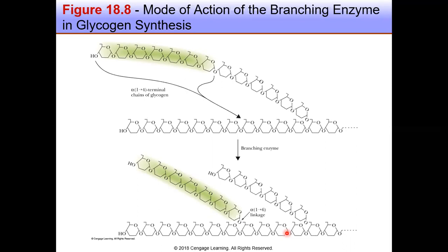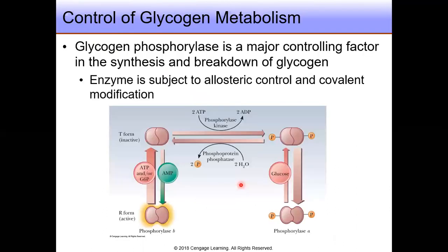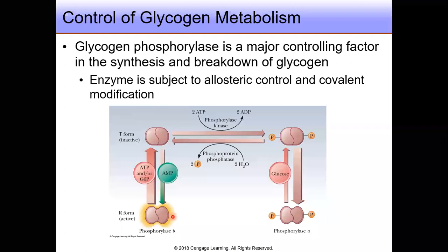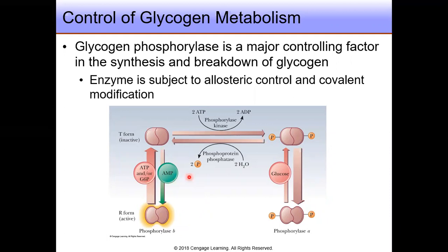Balancing glycogen breakdown and production: how does an organism ensure that glycogen synthesis and glycogen breakdown do not operate simultaneously? Because if this were to occur, the main result would be the hydrolysis of UTP, which would be a waste of chemical energy stored in the phosphoric anhydride bond. A major controlling factor lies in the behavior of glycogen phosphorylase. This enzyme is not only subject to allosteric control, but also subject to covalent modification — similar to the sodium-potassium pump where phosphorylation and dephosphorylation of an enzyme determine whether it is active. This figure summarizes some of the control features that affect glycogen phosphorylase activity.